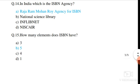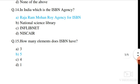Question number 15. How many elements does ISBN have? ISBN has five elements, separated by a space or hyphen. The five elements are: prefix element, registration group element, registration element, publication element, and check digits.